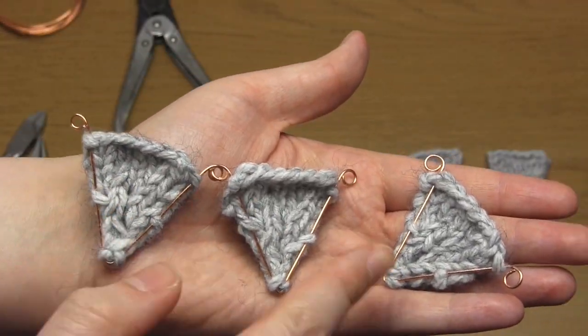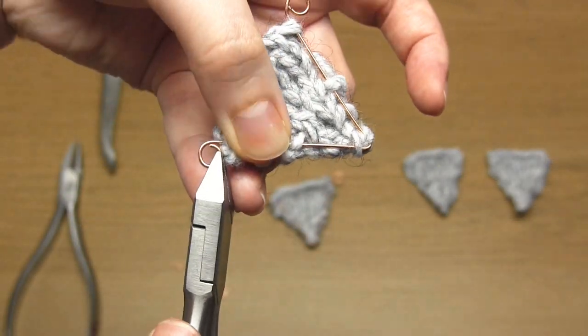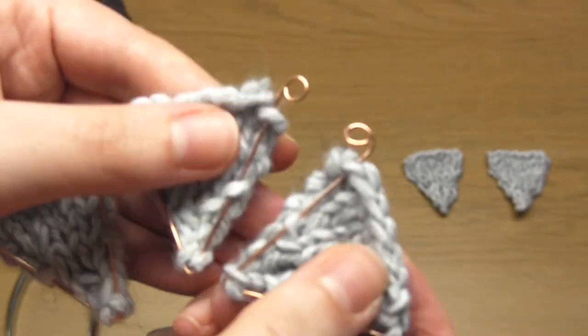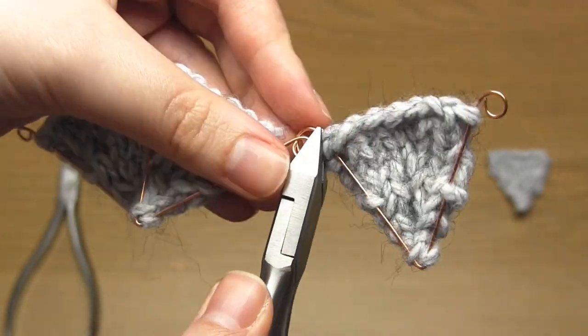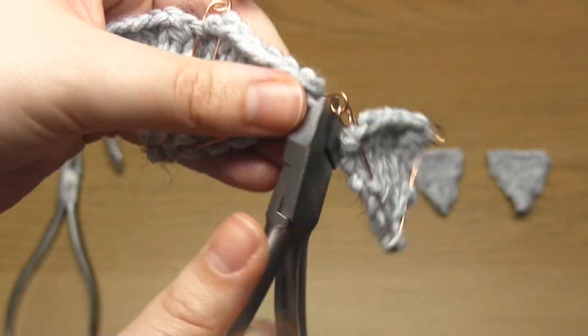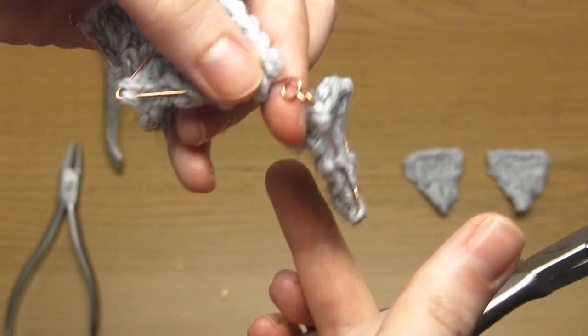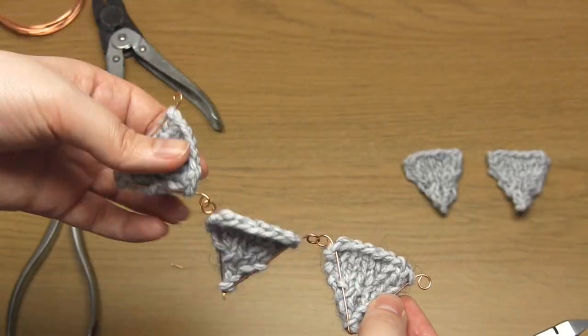Once you've done that you then need to join these triangles together. So open a wire loop on one of the triangles and join it to the next one. And just join all the triangles in the same way. Note that you will have to angle the wire loops to make sure all of the triangles line up and they all hang down nicely.